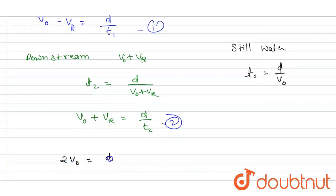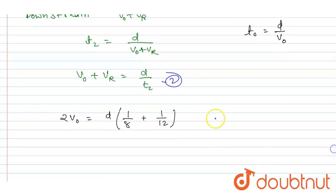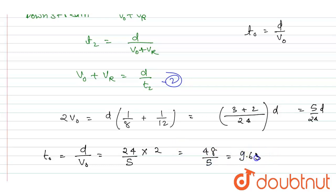And if you add the two expressions, you will write 2v₀ equals d(1/8 + 1/12), since the time taken in upstream and downstream are 8 and 12 respectively. So you can add them by taking the LCM, so LCM will be 24. You will write (3 + 2)d. We wanted d/v₀, and this is 5d/24. So I will write d/v₀, that is the time required to travel the same distance in still water, so it is 2 × 24/5. If you cross multiply, it will be 48/5, that is 9.6 hours.